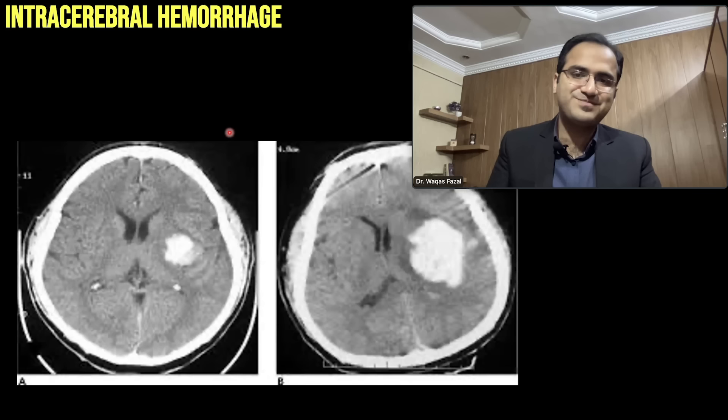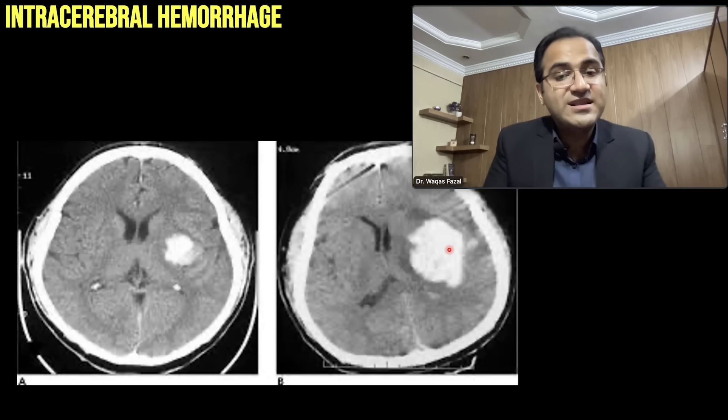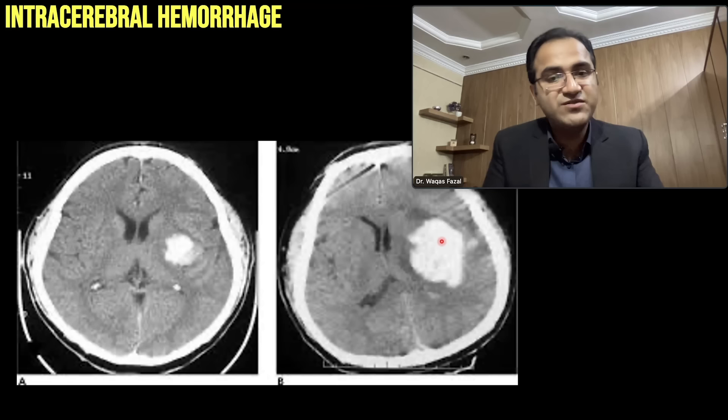Another picture shows intracerebral hemorrhage that has now progressed, pushing the brain toward the opposite side — this is called a midline shift. When the bleed exceeds a critical extent and pushes the brain to the opposite side, that is a midline shift.